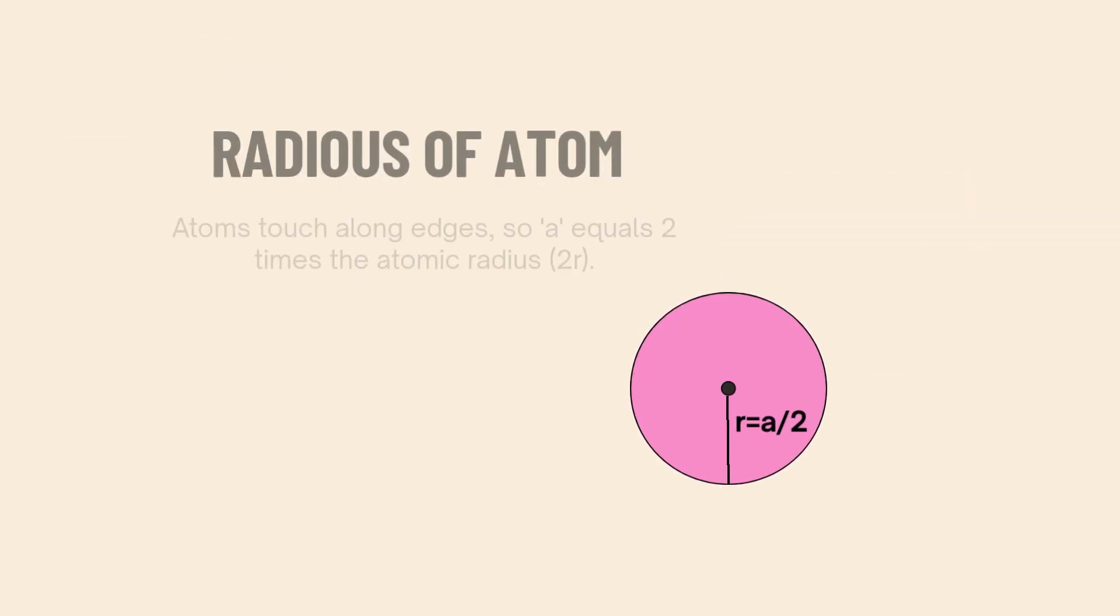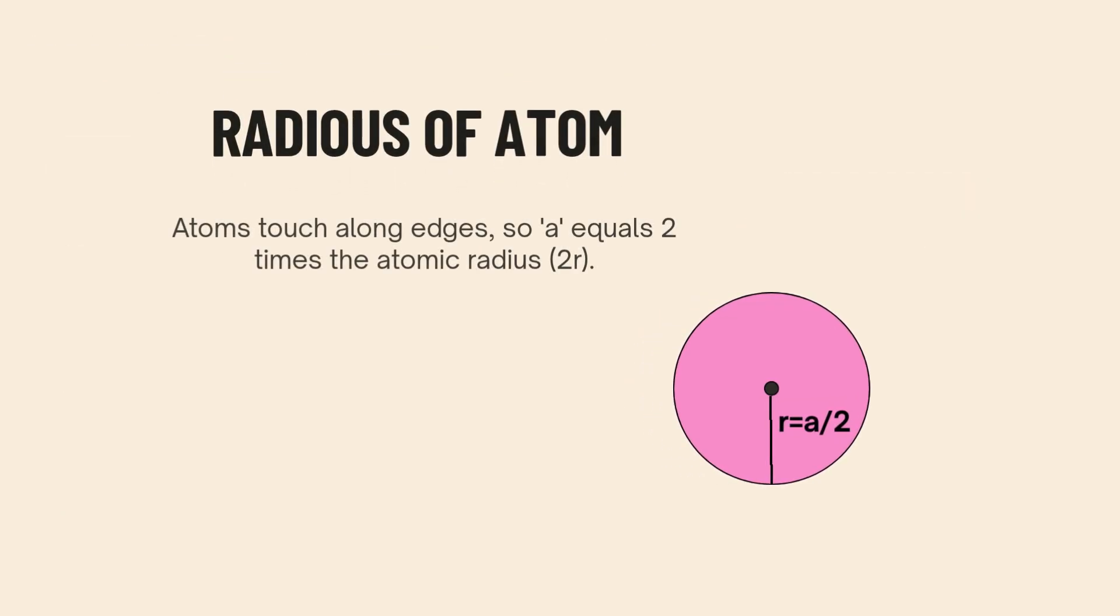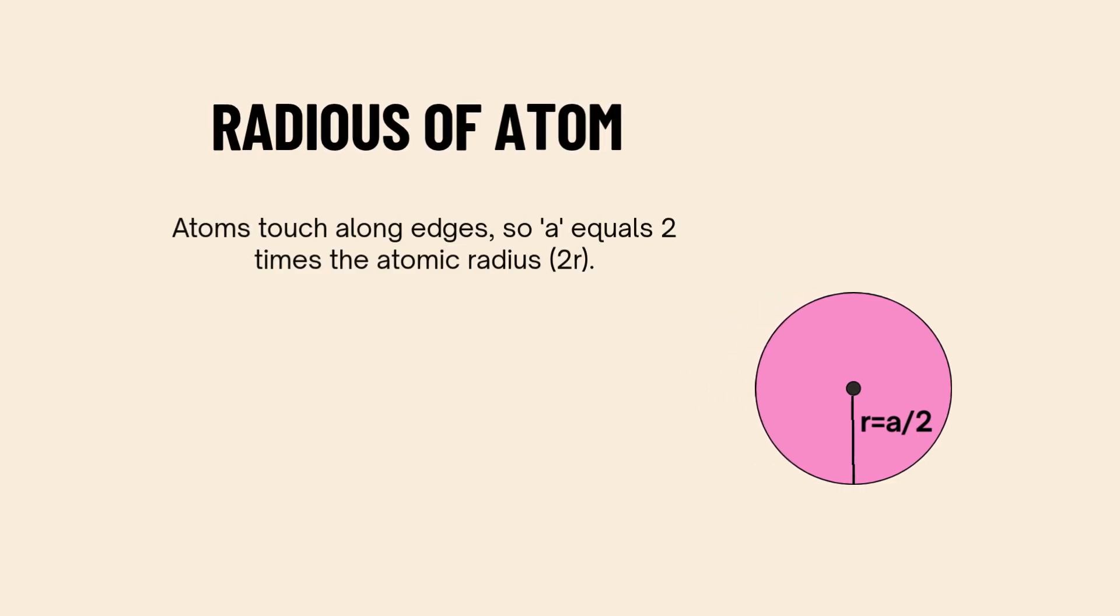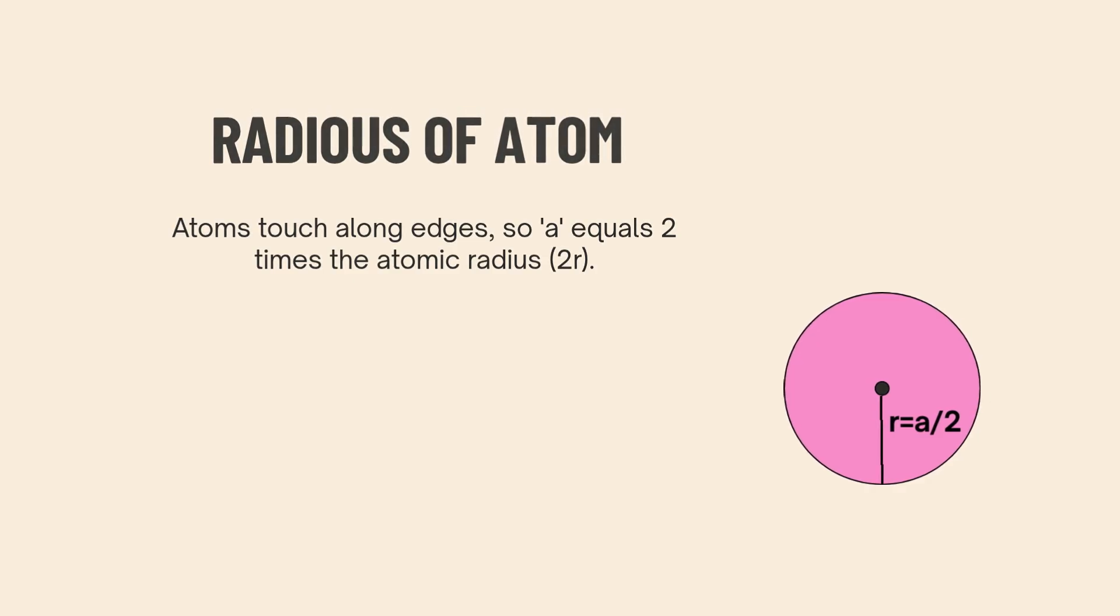This describes the relationship between atomic radius and the cube's edge length. In an SC structure, atoms touch each other along the edges. So, one edge of the cube contains two atomic radii, giving the relation A = 2R, where A is the edge length and R is the atomic radius.